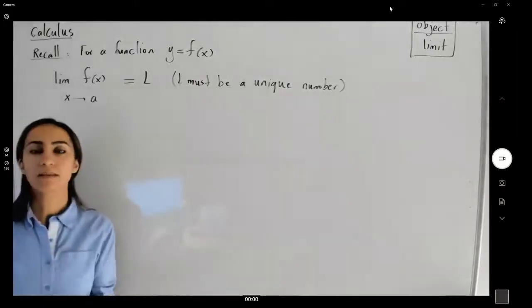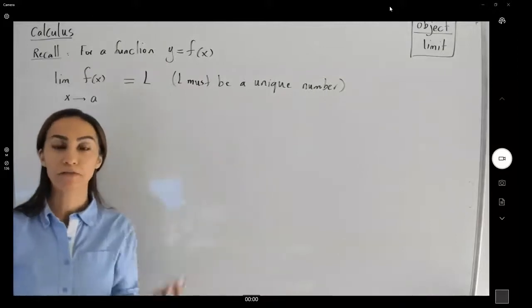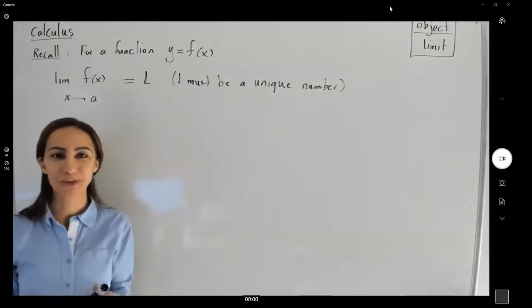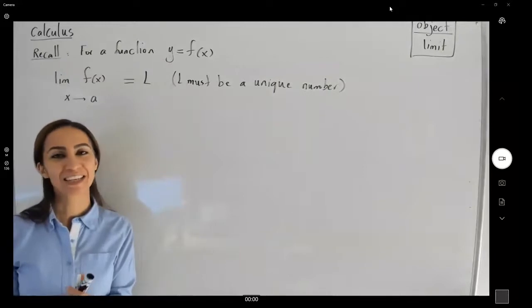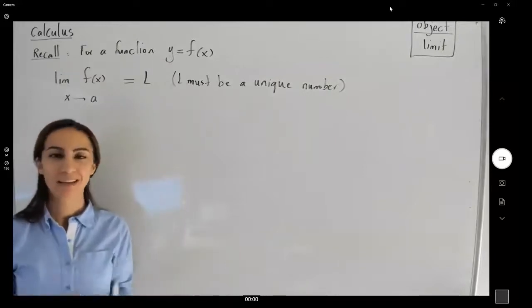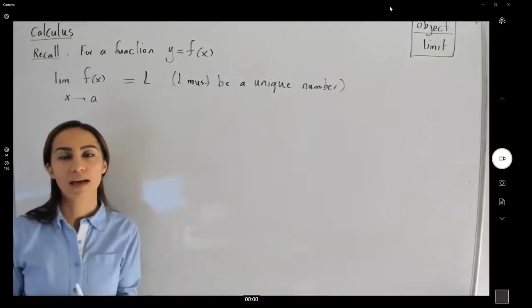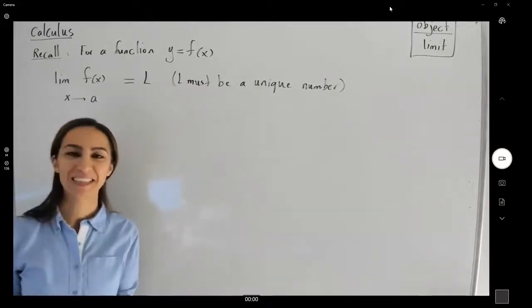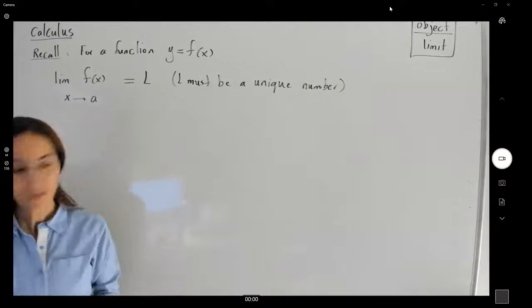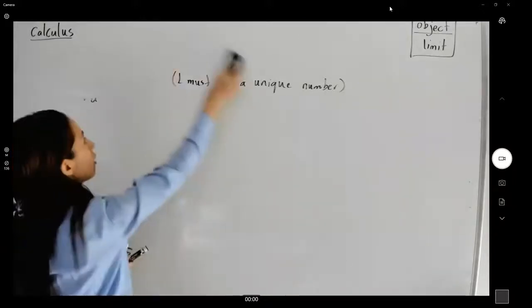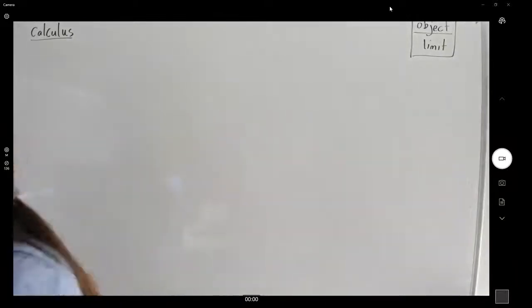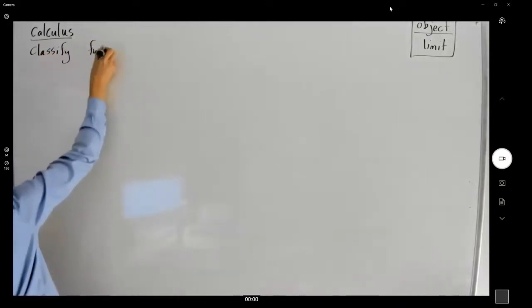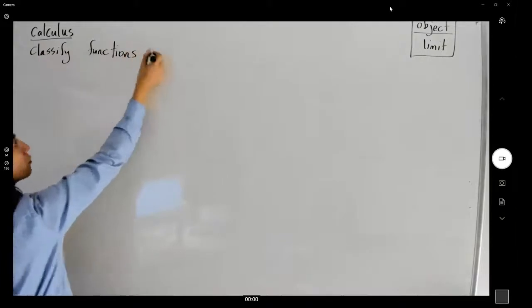So let's start classifying functions. We have sometimes nice functions — we are not worried about functions that are nice or combinations of nice functions. We can easily calculate the limit of those nice functions. Later on, you're going to see we have crazy-looking functions, and to find the limit of those types of functions, we have to come up with some techniques or other ideas. So let's classify functions to find the limit.